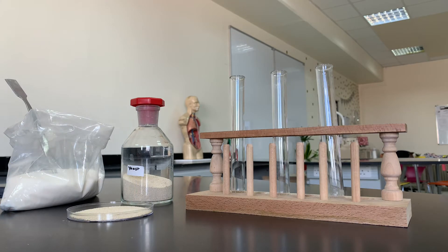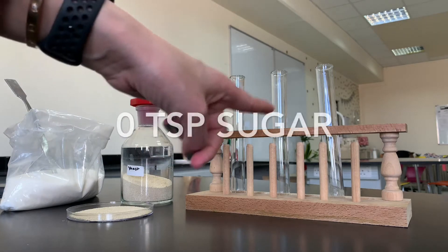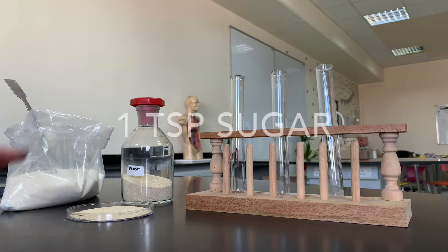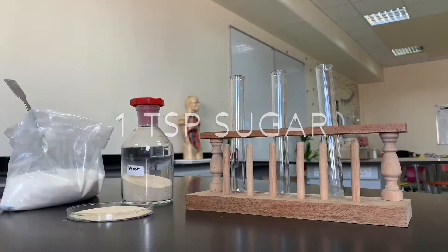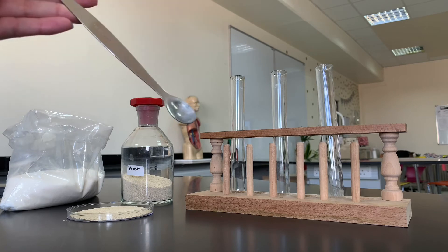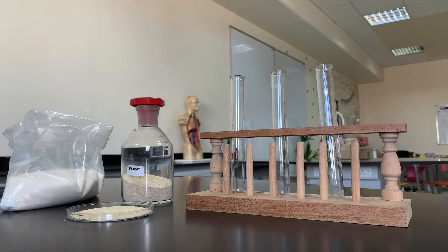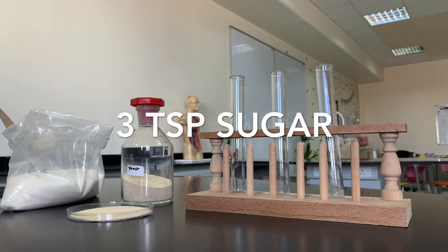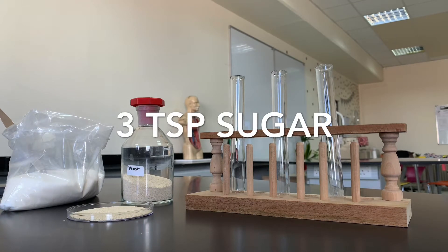Next I'm going to be adding different amounts of sugar into each test tube. In the first test tube, no sugar at all. In the second test tube, one teaspoon of sugar. And in the third test tube, three teaspoons of sugar.